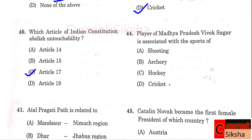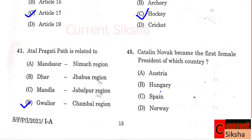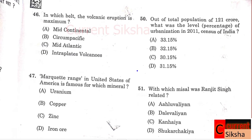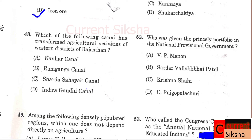Question 44: Player of Madhya Pradesh - Vivek Sagar is associated with which sport? Correct option C - Hockey. Question 45: Catalina Novak became the first female president of which country? Correct option B - Hungary. Question 46: In which belt is volcanic eruption maximum? Correct option B - Circum-Pacific. Question 47: The Mesabi Range in the United States of America is famous for which mineral? Correct option D - Iron ore. Question 48: Which canal has transformed agricultural activities of western districts of Rajasthan? Correct option D - Indira Gandhi Canal.